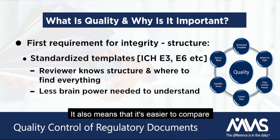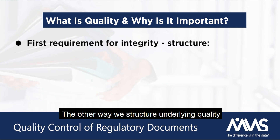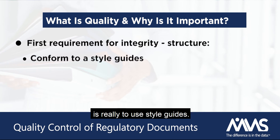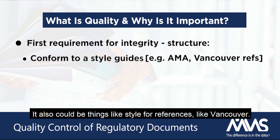It also means that it's easier to compare between studies, and that's really important. The other way we structure underlying quality is really through style guides — that could be the style guide for writing, such as the AMA style guide, and that also could be things like staff references like Vancouver.